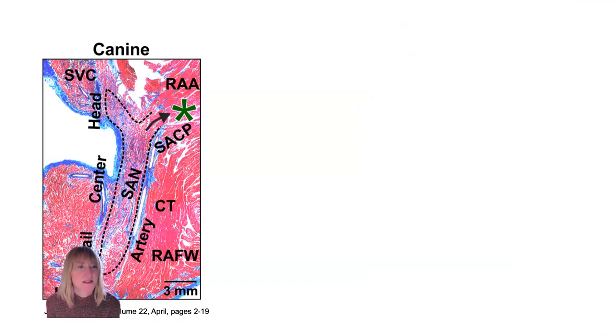Here we have a histologic section of the canine SA node, and the main thing I want to share with you here is that it's actually a fairly expansive structure, so it's this banana or cigar-shaped thing that is outlined by the dashed black line, and we can see from the scale in the lower right corner that the canine SA node actually ranges between about 2 to 5 millimeters in width and 10 to 30 millimeters, or 1 to 3 centimeters in length, so it can be a sizable structure.